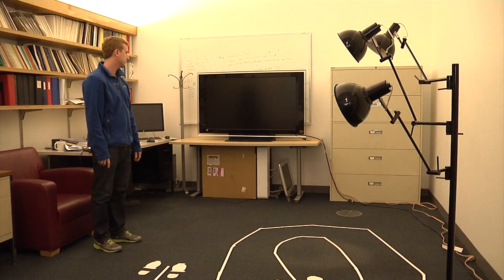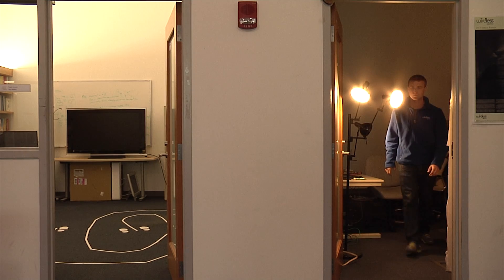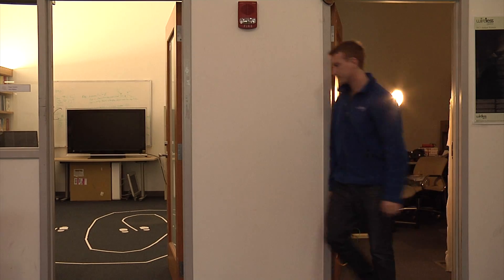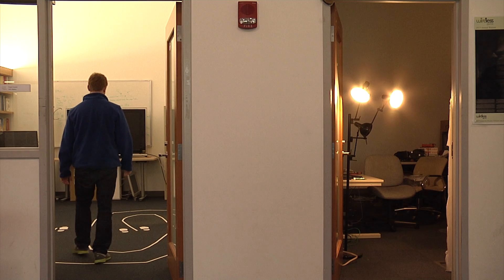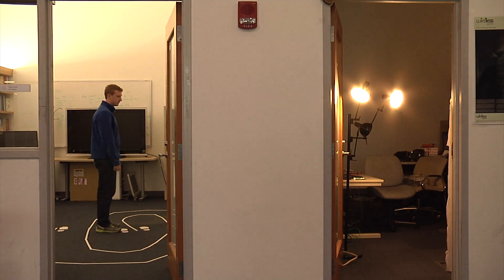Because YTrack works through walls, it can allow you to control appliances even from another room. Say you leave a room and forget to turn off the lights, all you have to do is point your hand in the direction of that room to turn the lights off.